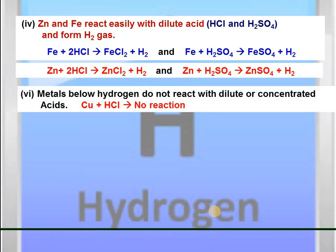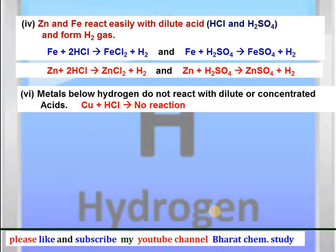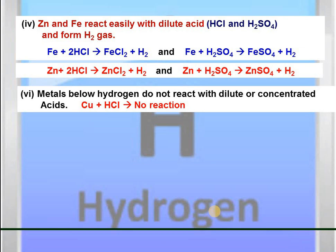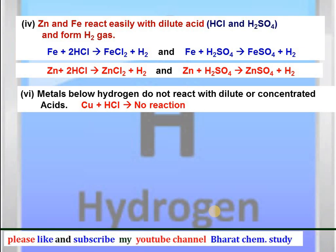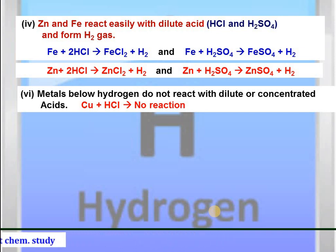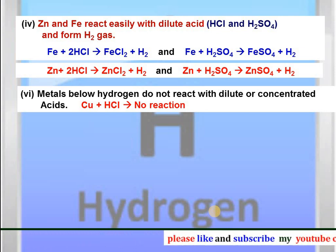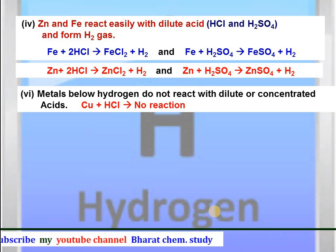The metals below hydrogen do not react with dilute or concentrated acids. Copper is present below hydrogen in the reactivity series; therefore it is unable to displace hydrogen from dilute acids. When copper is added to dilute HCl or dilute H2SO4, no reaction will take place.